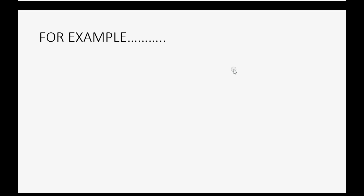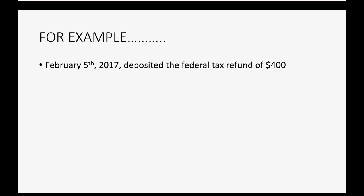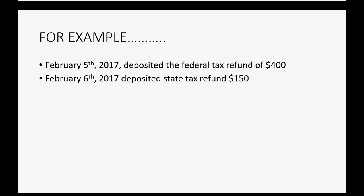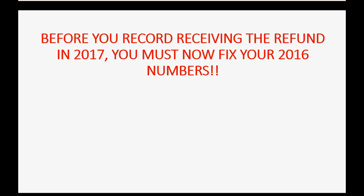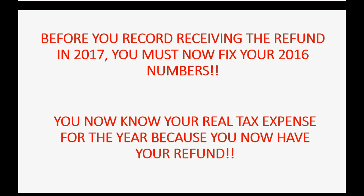For example, let's imagine on February 5th of 2017 we deposited the federal tax refund of $400, and on February 6th of 2017 we deposited the state tax refund of $150. Before you can record receiving the refund in 2017, you must first fix your 2016 numbers — you now know your real tax expense for 2016 because you have the refund.